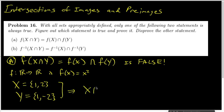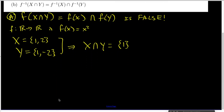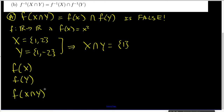X intersect Y is the singleton set containing just 1. Now, all I have to do is calculate f(X), calculate f(Y), and calculate f(X∩Y). f(X) is going to be {1², 2²}, so that will be the set containing 1 and 4.